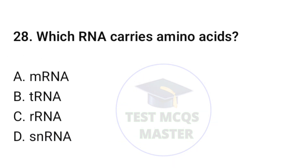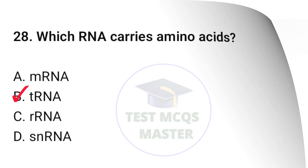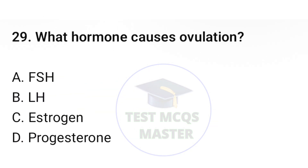Question number twenty-eight: which RNA carries amino acids? The correct option is B, tRNA. Question number twenty-nine: what hormone causes ovulation? The correct option is B, luteinizing hormone.